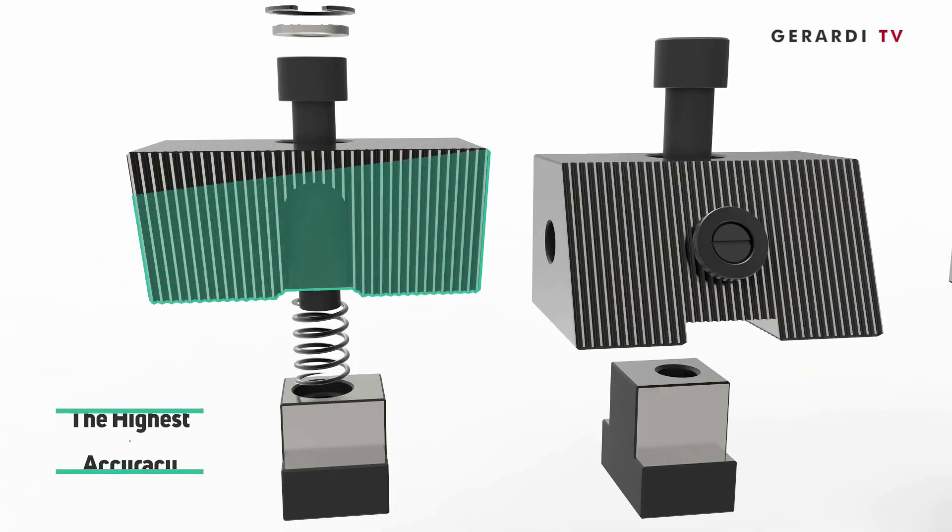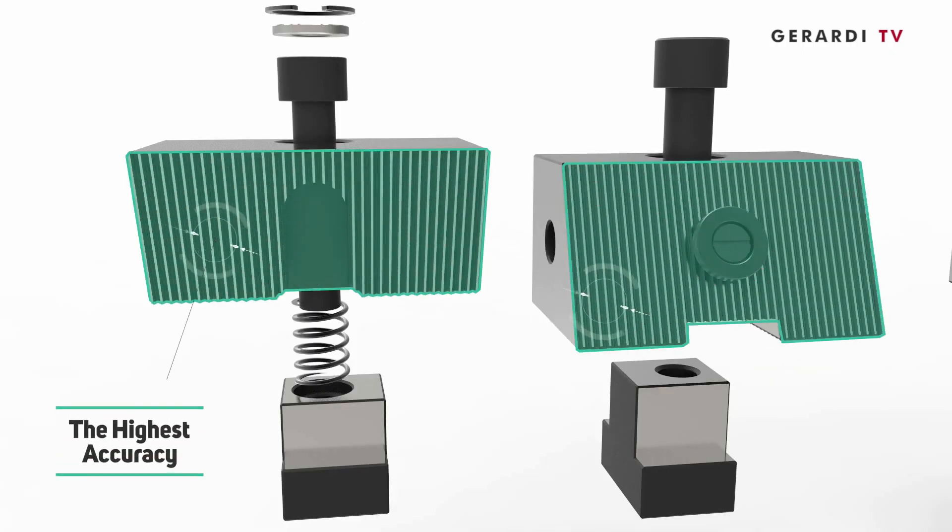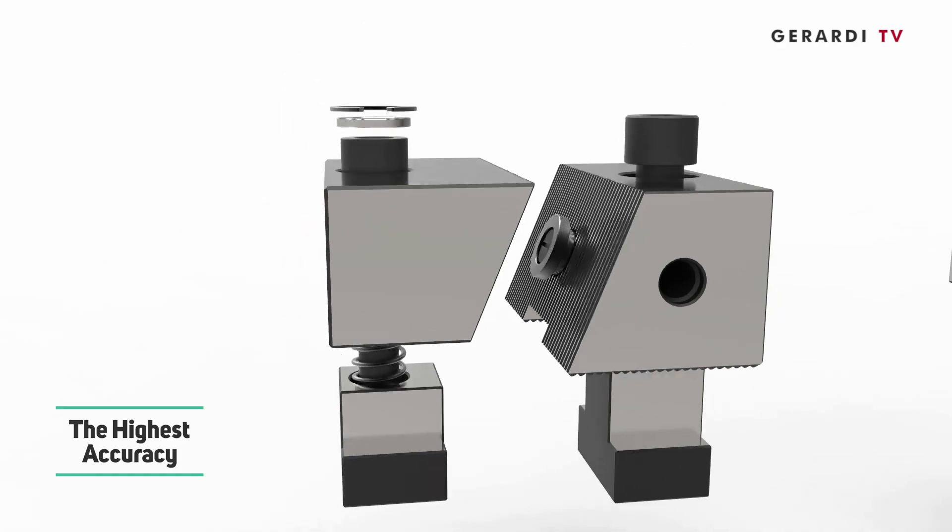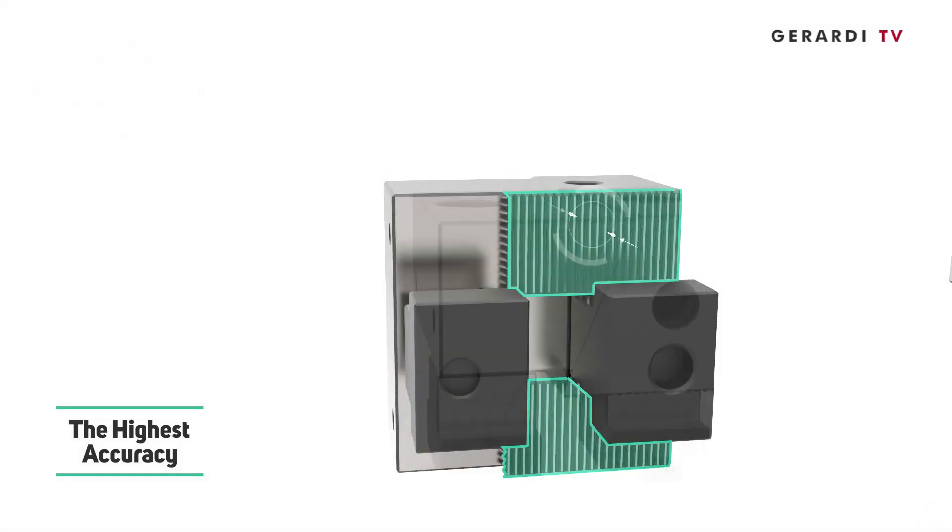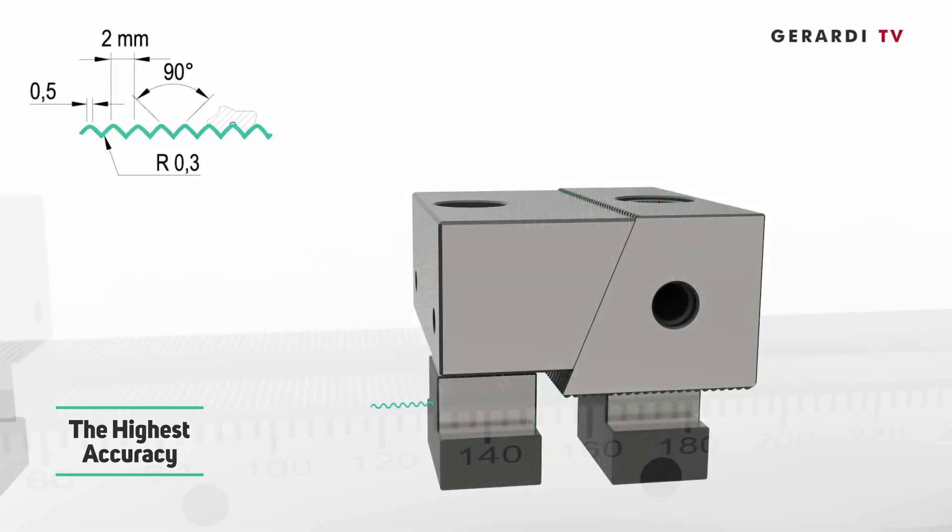Feature 2: High accuracy thanks to the ground grip fit comb teeth on both the base and the jaws, coupling between the vise base body and the fixed jaw and coupling between fixed and movable jaws.